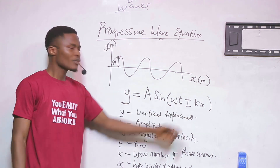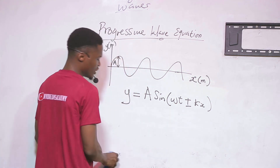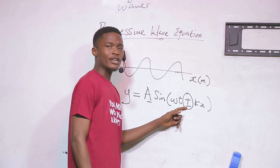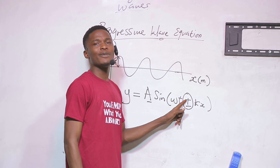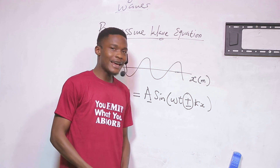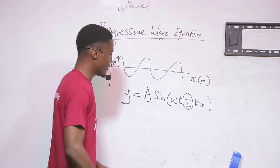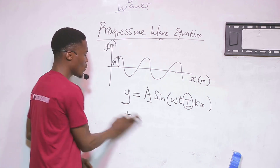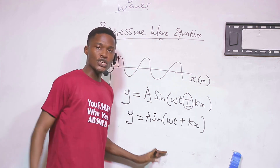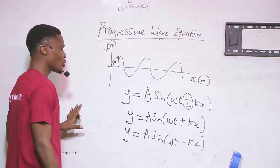Now if we analyze this equation, notice the plus or minus in the middle. This does not mean you always use both — sometimes there will be a plus, sometimes a minus, depending on the direction of the wave. So you get two separate equations: y equals A sine(ωt + kx), or y equals A sine(ωt − kx).